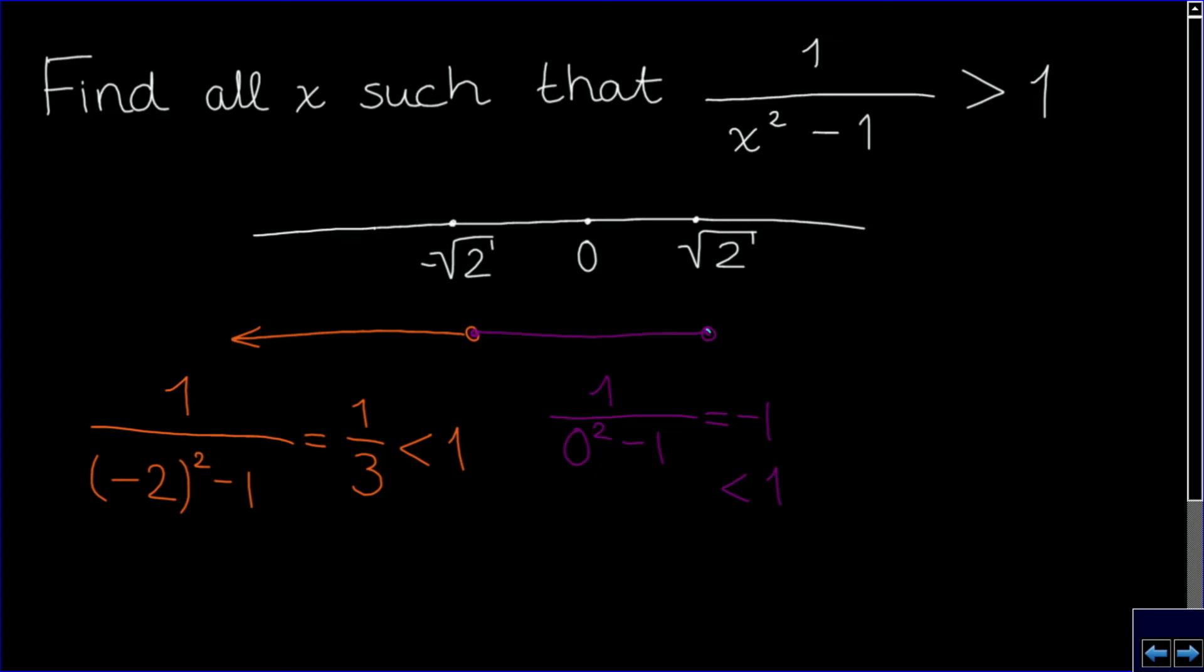So for every interval, the inequality does not hold. In our last interval, from the square root of 2 to infinity, we can take the point x equals 2 and we get 1 over 2 squared minus 1, which is again 1 over 3, smaller than 1. So for every interval, the inequality does not hold.